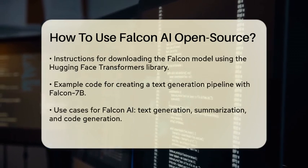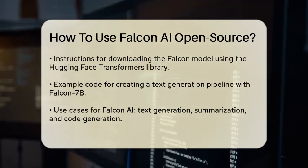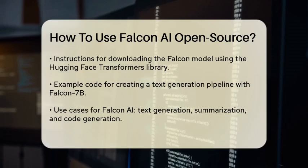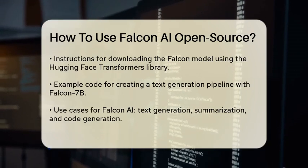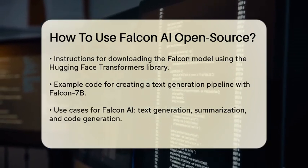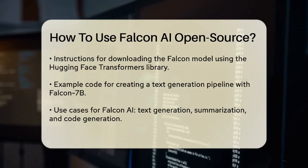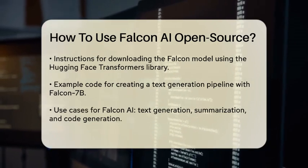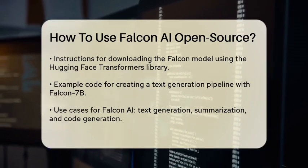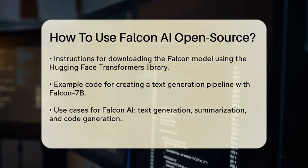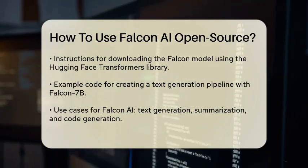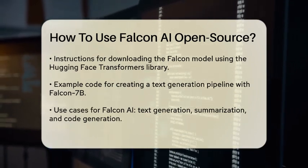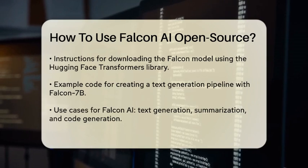Next, you'll need to download the Falcon model. You can use the Hugging Face Transformers library to do this. Here's an example of how to download the Falcon 7b model and create a pipeline: from transformers import pipeline. Model name is equal to 'falcon-7b-instruct'. Pipe is equal to pipeline, text generation, model is equal to model name.